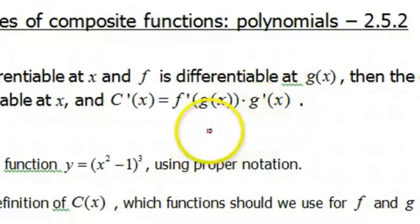So basically, you need to identify an inside function and outside function. Decide which function is being composed into the other one. Then once you can identify those, putting together the chain rule is fairly straightforward.